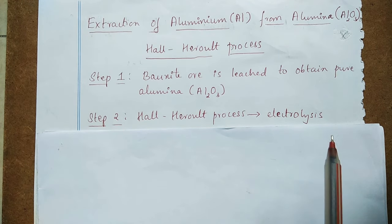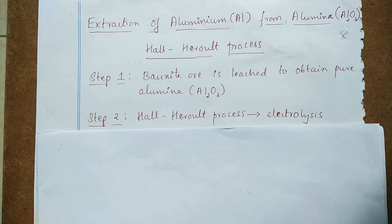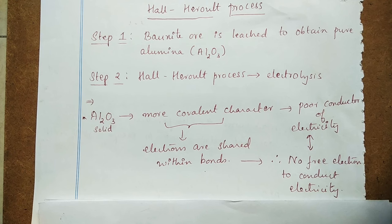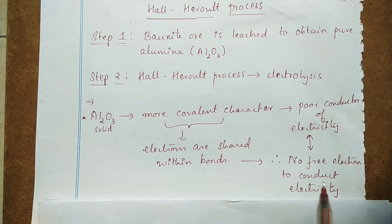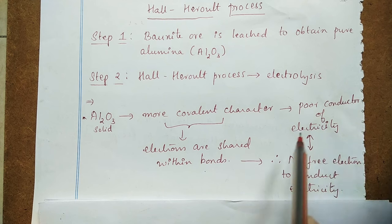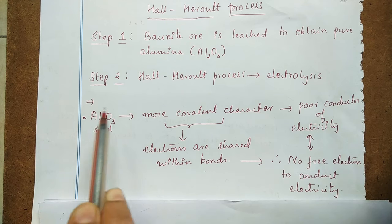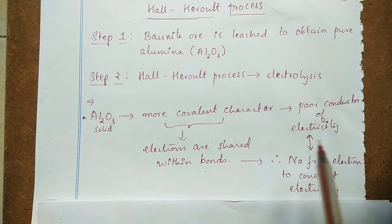As you all know, electrolysis is done by passing electric current, so the substance under study should be a good conductor of electricity. Here we need to remove aluminium from aluminium oxide, so the important substance is aluminium oxide. The bonds in aluminium oxide have more covalent character. A covalent bond is formed by sharing of electrons, so the electrons are shared within the bonds and free electrons are not available to conduct electricity. Hence, covalent compounds are poor conductors of electricity, and aluminium oxide is a poor conductor of electricity.